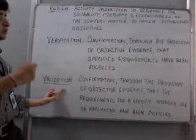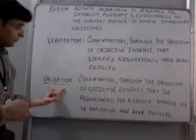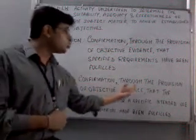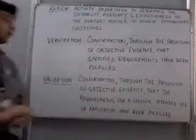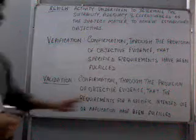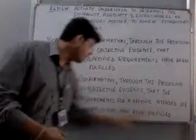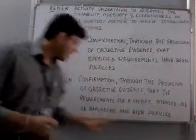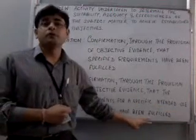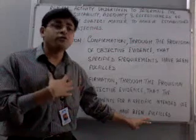Validation, as per ISO 9000-2005, is confirmation through the provision of objective evidence that the requirements for a specific intended use or application have been fulfilled. Remember the word: use and application.